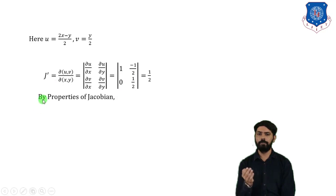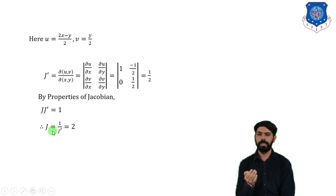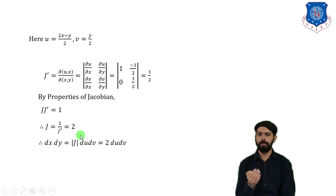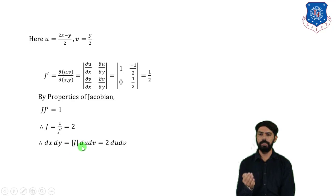By the property of Jacobians, J × J' = 1. Therefore J = 1/J' = 1/(1/2) = 2. So the Jacobian J equals 2, and dx dy = |J| du dv = 2 du dv.